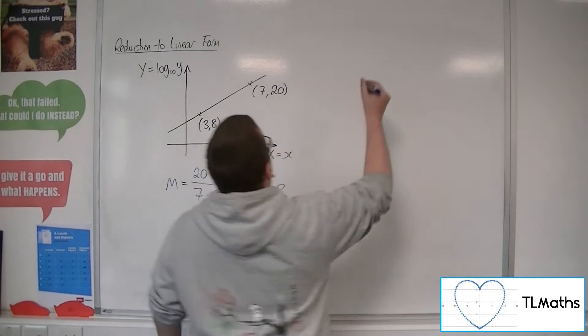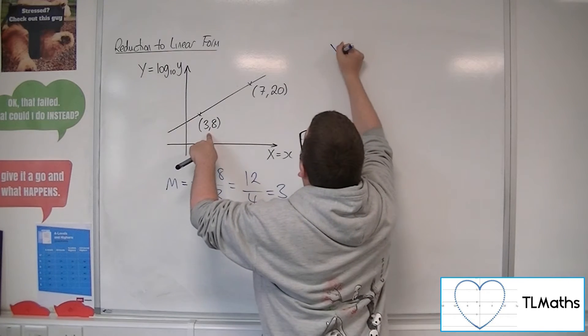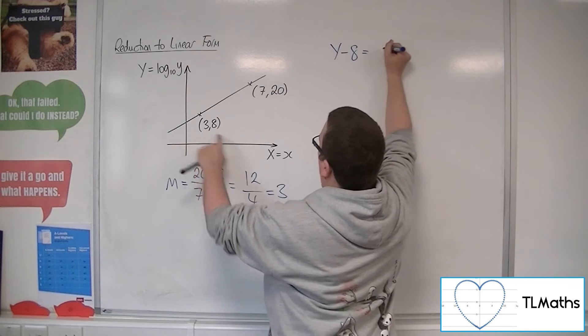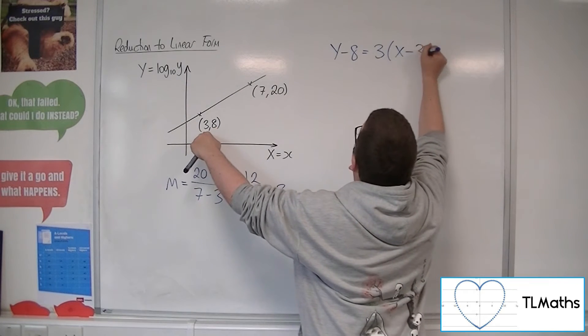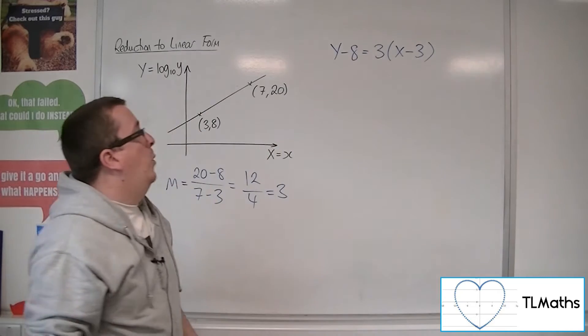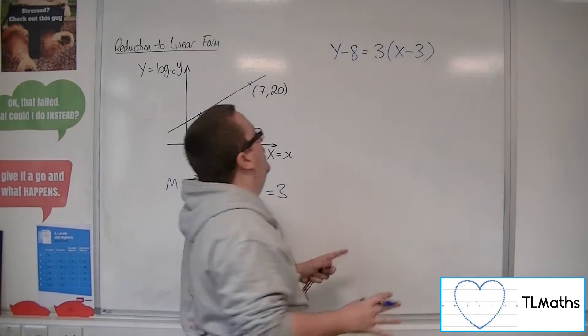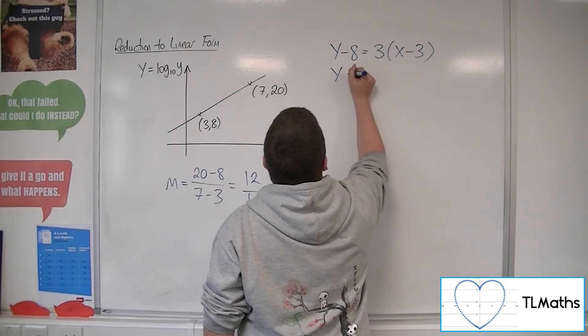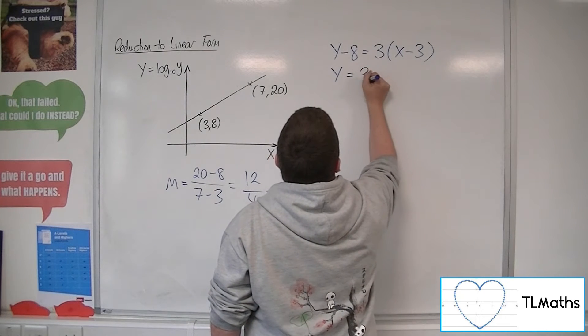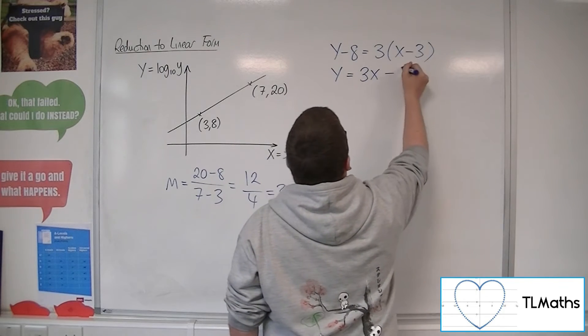So what I can then do is I can say, let's choose this point. So y minus 8 is equal to the gradient 3 times by x take away 3. So that is the equation of the straight line. Now, I don't particularly want it in that format, so let's simplify that. Let's put it into y equals mx plus c form. So that would be 3x, I'm going to get a minus 9, add on the 8, so minus 1. So y equals 3x minus 1.